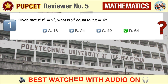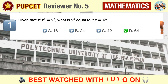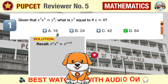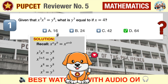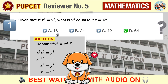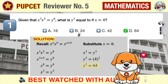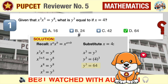The correct answer is D, 64. Recall that when multiplying variables with the same base but different exponents, we add the exponents. Hence, x raised to three times x raised to five is simply x raised to eight. If x raised to eight equals y raised to eight, then x cubed should also equal y cubed. Since x equals four, y cubed should be four cubed, or 64.